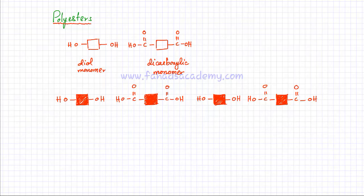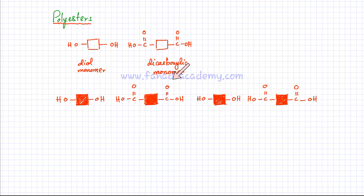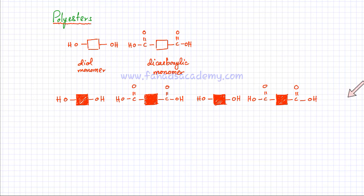I've drawn these two monomers — my dicarboxylic acid monomer and my diol monomer — in a repeated fashion. There's one molecule with OH groups on both sides, then another with carboxylic acid groups on both sides, then again one with OH groups, then one with carboxylic acid groups. Remember, polymer chains are very long — they contain thousands of different monomers, so this repeated formation is going to continue.